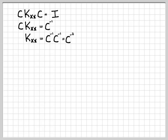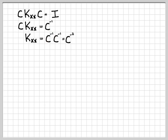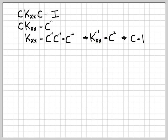Multiplying from the left by C inverse leaves just K_xx on the left, and C inverse times C inverse gives C to the negative 2 on the right. So K_xx equals C to the negative 2. Inverting both sides gives K inverse equals C squared. Taking the square root of both sides, C equals K to the negative one-half. That's a compact expression for C in terms of the original covariance matrix.